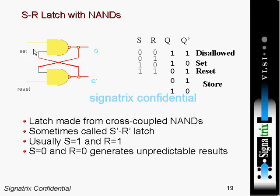When S is zero, the output will be one, which feeds forward and gives output zero. So S=0 and R=0 generates unpredictable results.